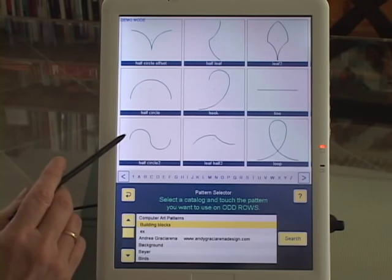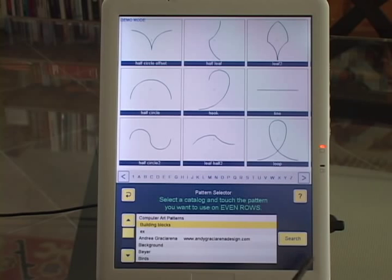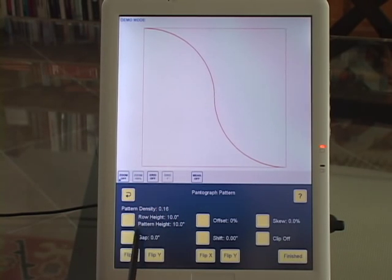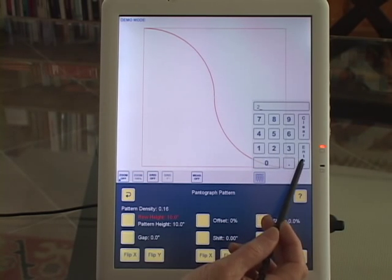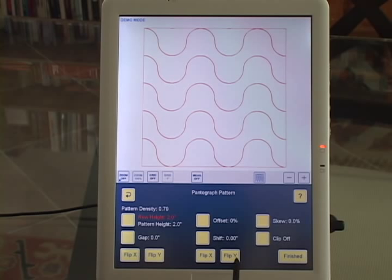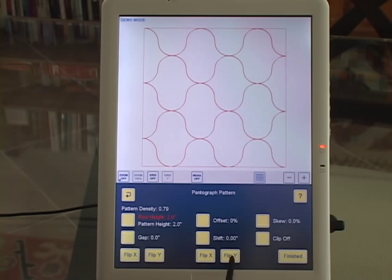This half circle two, I want that. Continue, continue. Now it's way too big. I'm going to reduce the row height to two inches, and now I'm going to flip Y here on the even numbered rows.